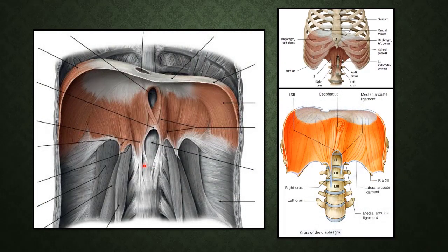This is the right crus, this is the left crus, and this is the median arcuate ligament. From the right crus to the transverse process of L1 is the right medial arcuate ligament; similarly the left medial arcuate ligament covers the psoas major - the thickening of fascia covering psoas major makes the medial arcuate ligament. Thickening of fascia covering quadratus lumborum makes the lateral arcuate ligament, which extends between the transverse process of L1 to the lower border of the 12th rib.